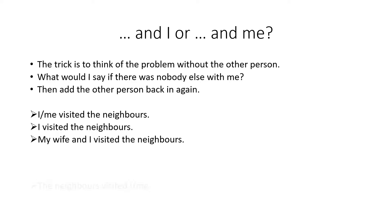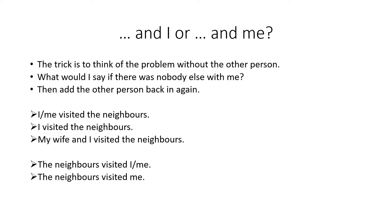Now if we look at the other example — 'the neighbours visited I or me' — I think we're all fairly clear that 'the neighbours visited I' is not correct and it should be 'the neighbours visited me.' So when we then add the other person back in again, we get 'the neighbours visited my wife and me.' And this trick works every time.